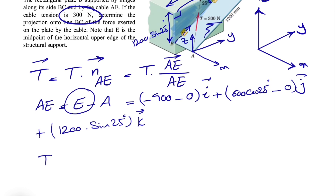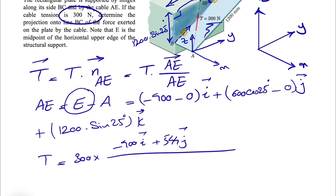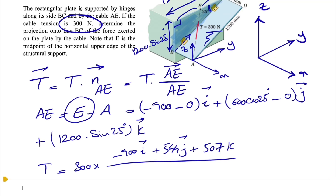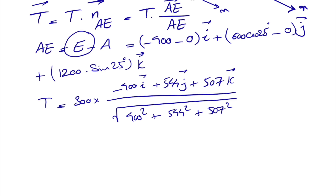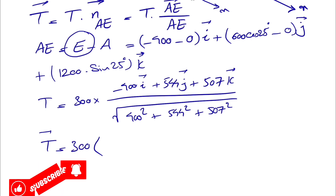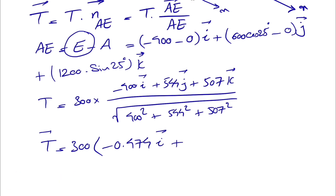Now we're ready to find the unit vector for T. We have T = 300 times the unit vector, with components: x = minus 400 i, y = 1200 × cos(25°)/2 ≈ 544 j, and z = 1200 × sin(25°) ≈ 507 k. For the magnitude we have the square root of (−400)² + 544² + 507². Dividing each component by the magnitude gives T = 300 × (−0.474 i + 0.644 j + 0.601 k).